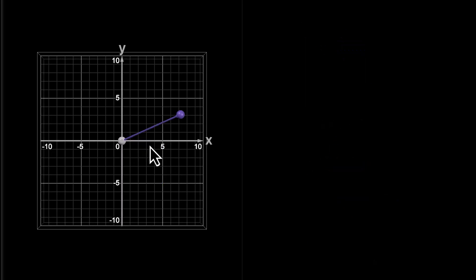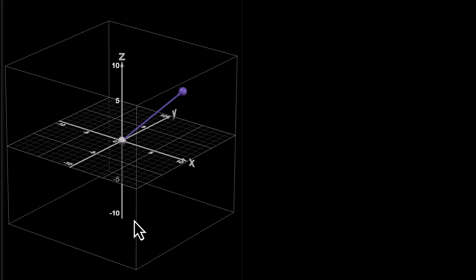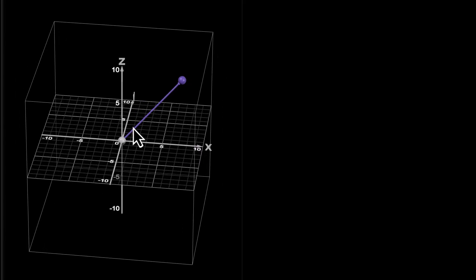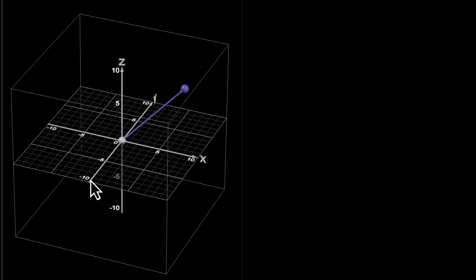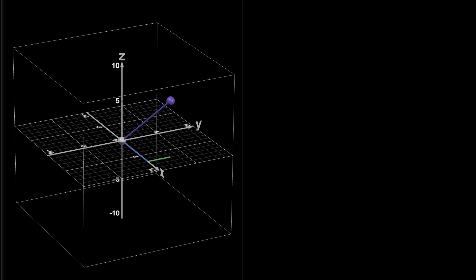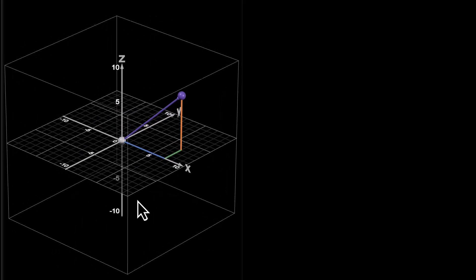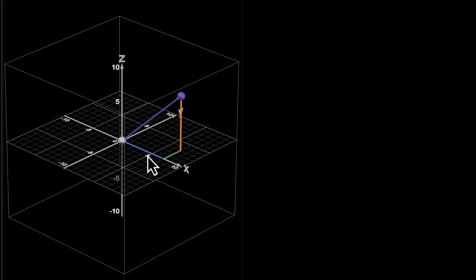Now let's see how things work when we move from two dimensions to three dimensions. In 3D, to reach this point we have to move along the X axis, the Y axis, and the Z axis. We move along the X axis, then the Y axis, then the Z axis, and now we have reached from the origin to this point. Pause the video — think about how what we did in 2D can be used in 3D to get this length. How will you figure out this purple length using blue, green, and yellow?